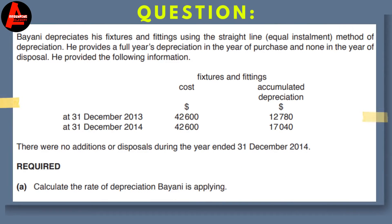Here we have a question example, so let us take a look at the example on this screen. Bayani depreciates his fixtures and fittings using the straight line method, which is also called the Equal Installment method. He provides a full year's depreciation in the year of purchase and none in the year of disposal. He provided the following information.